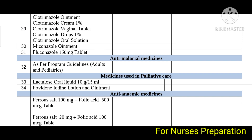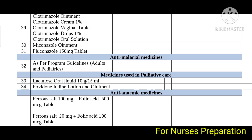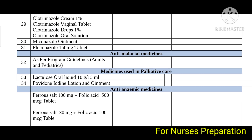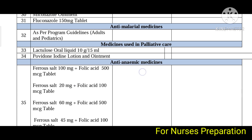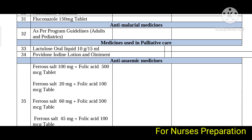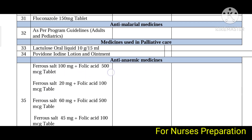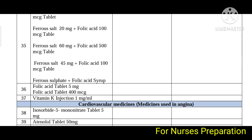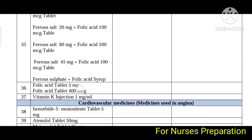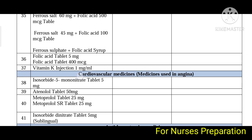Next are medicines used in palliative care — it includes lactulose and povidone. Next are anti-anaemic medicines — it includes ferrous salts, folic acid tablets, and vitamin K injection 1 mg/mL.